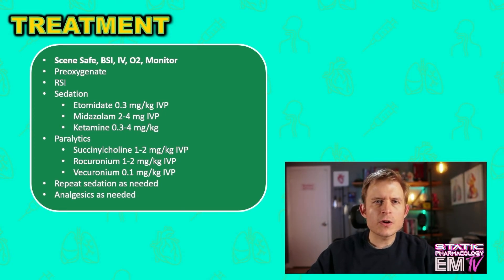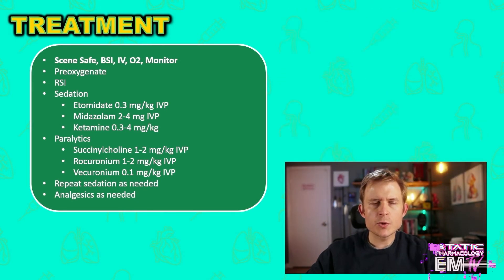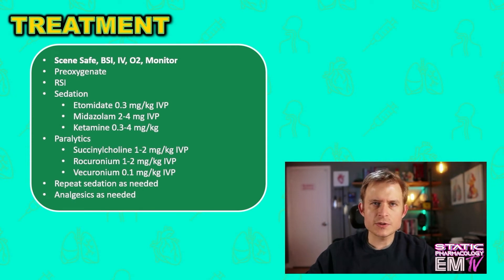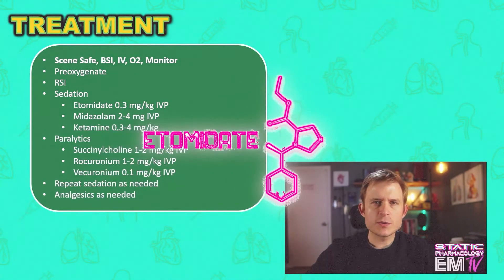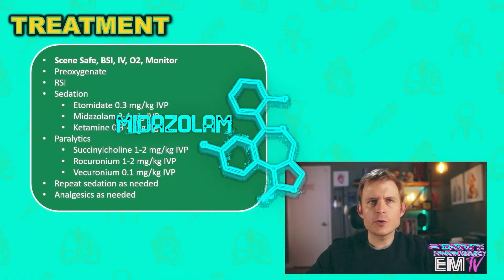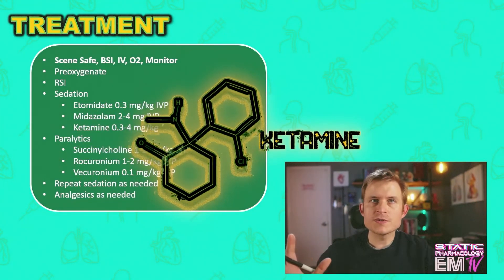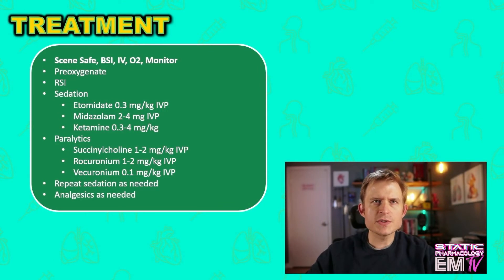RSI stands for rapid sequence induction or rapid sequence intubation — both terms are correct and interchangeable. The first step in RSI, besides pre-oxygenation, is to provide sedation to the patient. The sedatives I would commonly choose would be things like etomidate, midazolam, or ketamine. Etomidate is dosed at 0.3 mg per kg IV push. Midazolam is 2–4 mg IV push, and ketamine has a wide range of applicable doses, anywhere from 0.3 mg up to 4 mg per kg depending on what you're using it for.